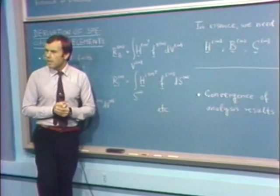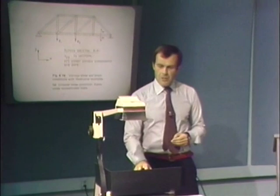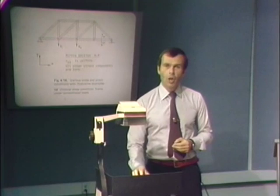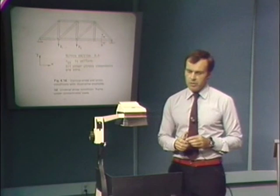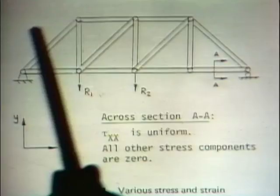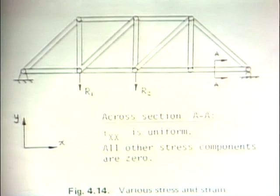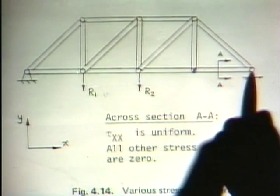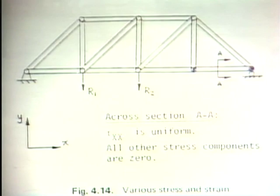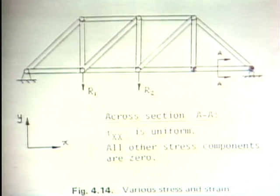Let us categorize the different types of problems we encounter in structural analysis. For a truss structure — an assemblage of truss elements — we have one-dimensional stress conditions. The only stress on section AA would be tau_xx. Going a little bit ahead, the only strain we would be interested in is epsilon_xx, and the stress-strain law is simply Young's modulus.